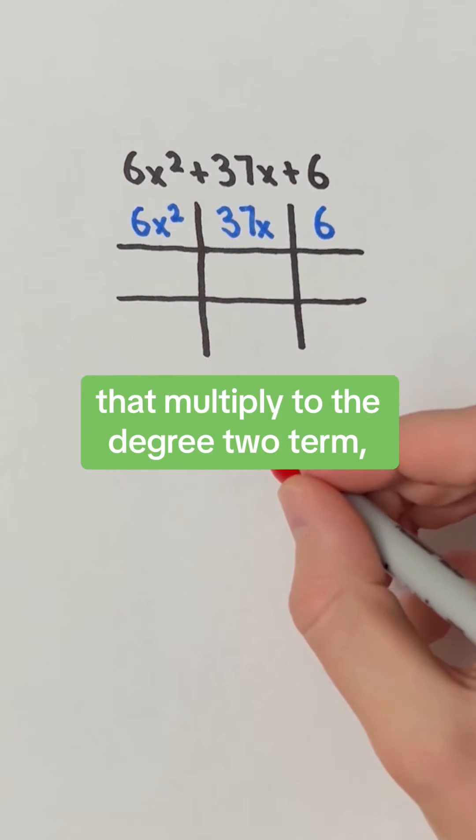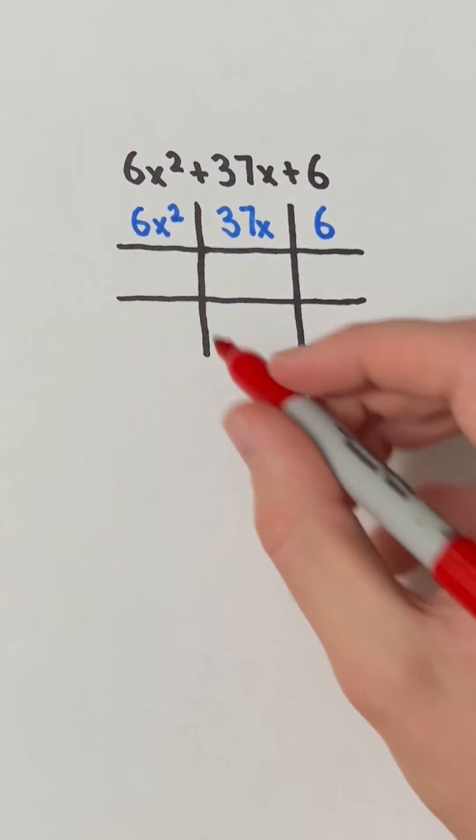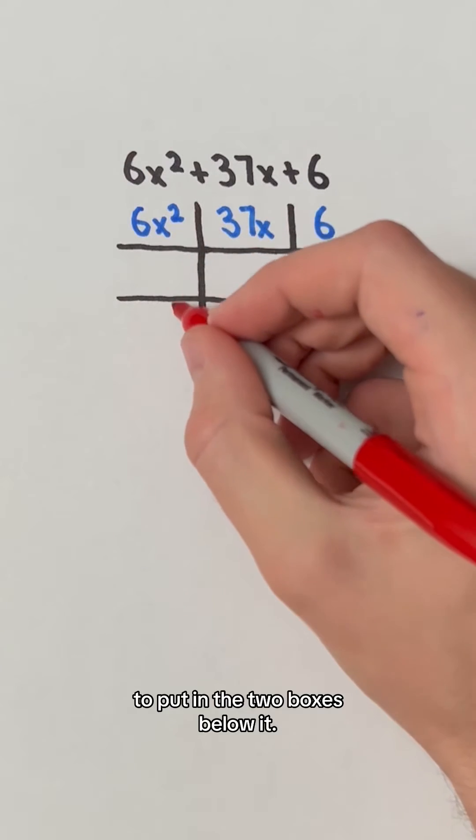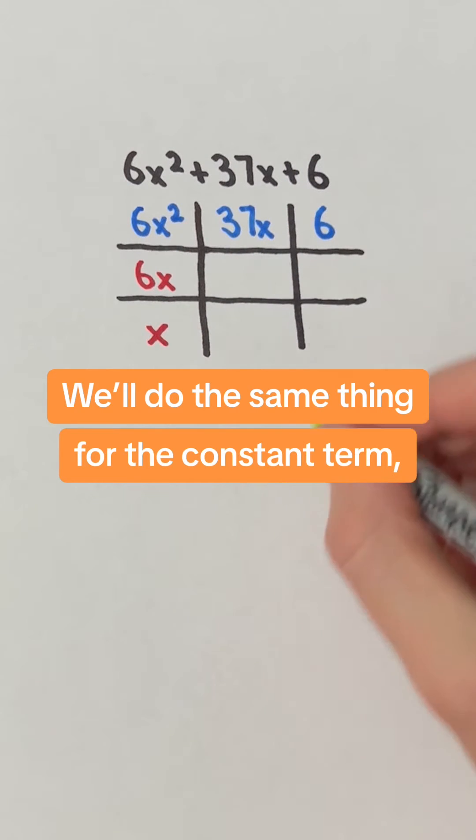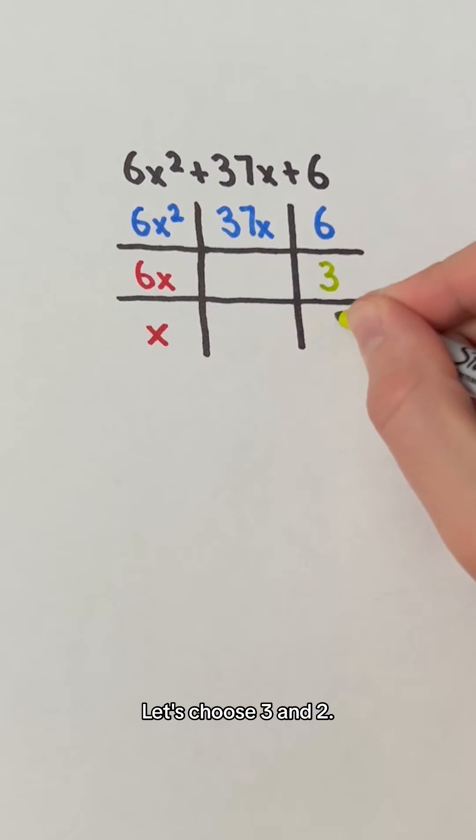Now, we'll want to choose two factors that multiply to the degree 2 term, 6x squared, to put in the two boxes below it. Let's choose 6x and x. We'll do the same thing for the constant term, 6. Let's choose 3 and 2.